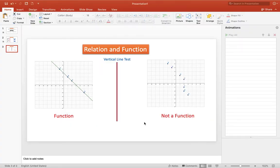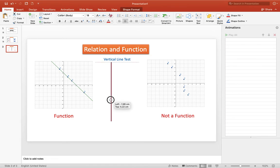Now, if the given is a graph, we can use this vertical line test to check if it is a function or not. If the line, or the graph, or the points will touch our vertical line test once, therefore it is a function.